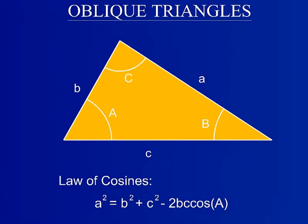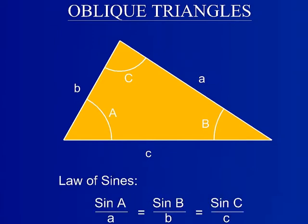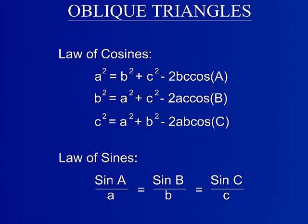Oblique triangles are triangles that do not have an angle equal to 90 degrees, which means that the basic trigonometric functions do not apply. The law of sines and the law of cosines can be used for oblique triangles. Together, they allow for the calculation of all unknown angles or sides as long as there are three knowns, including at least one angle and one side length. Displayed is a list of all the permutations of the law of cosines to solve for any side lengths.